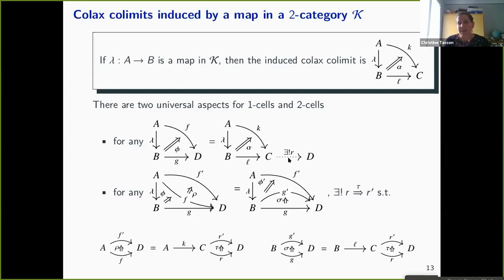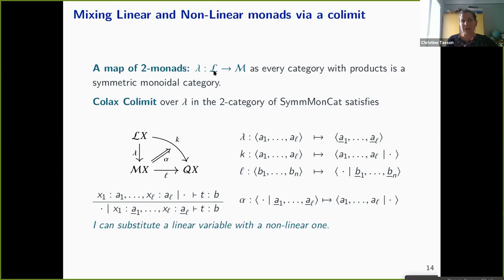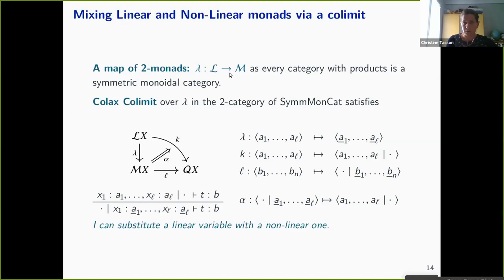The unicity of R and of the two-cell is really important for the following. This is the general colimit construction. Now I want to apply it to a map of two monads. Remember, L stands for free strict symmetric monoidal categories and M for free categories with products. There is a map of two monads between L and M because every category with products can be seen as a strict monoidal category, and we want to apply our colax colimit construction on this map.